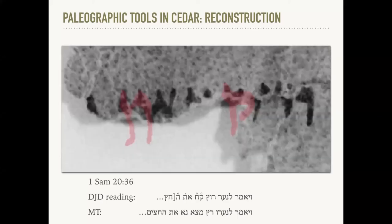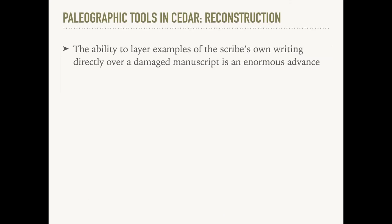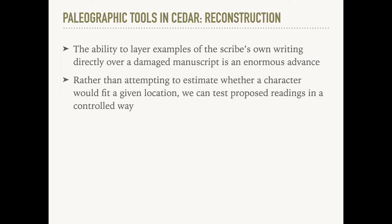I'm going to quickly go through the same steps for tav, dragging and dropping a few onto the image where we can already see the shape and the ductus are problems, adjusting one and laying it over the fragment — we can see that indeed it isn't a good fit for the ink. This manuscript does not say 'kach et' as the DJD editors posit. The ability to layer examples of a scribe's own writing directly over a damaged manuscript is an enormous advance in the study of ancient texts. Rather than attempting to estimate visually or mathematically whether a character would fit a given location, we can test proposed readings in a controlled and methodologically rigorous way. Scholarly judgment is still required — the software does not match characters or suggest reconstructions, and this is a strength of the system. The tools in CEDAR don't reduce the skill or agency of the researcher; they simply enable her to do her work with greater precision and efficiency.